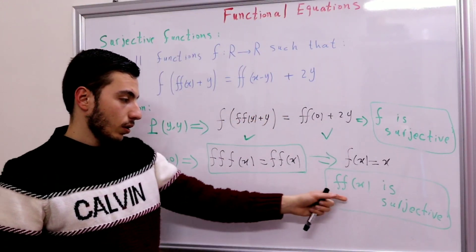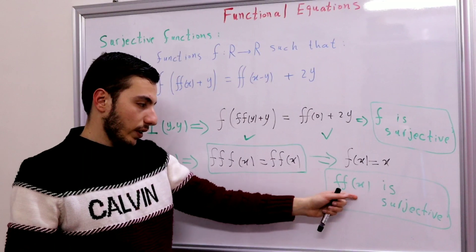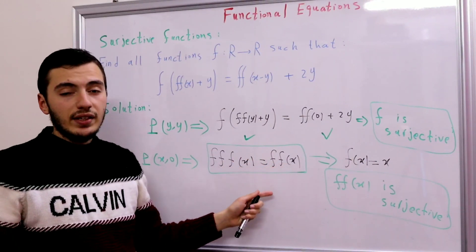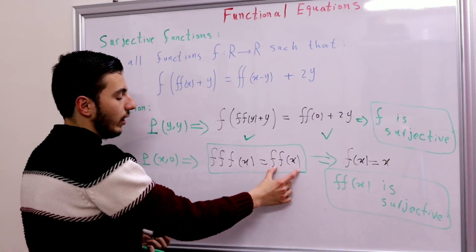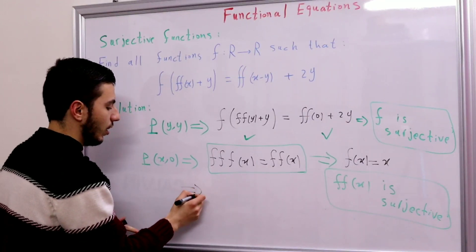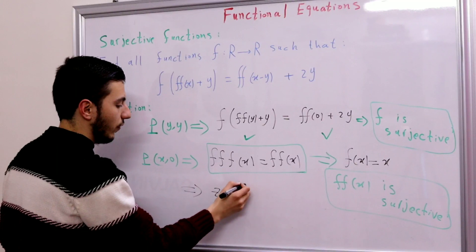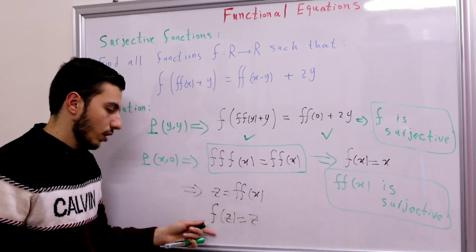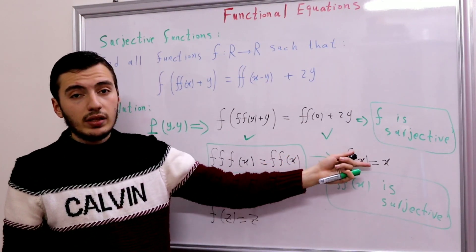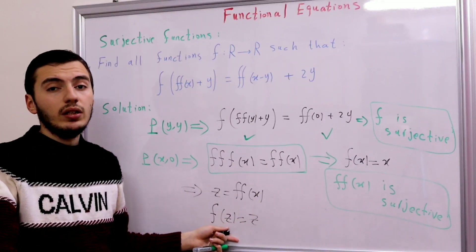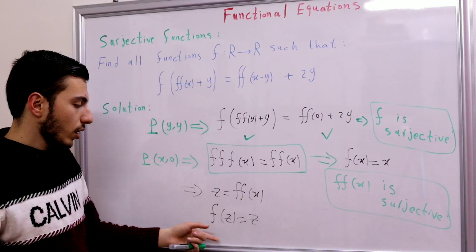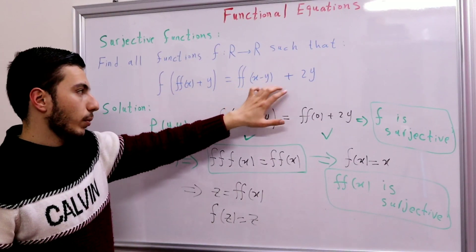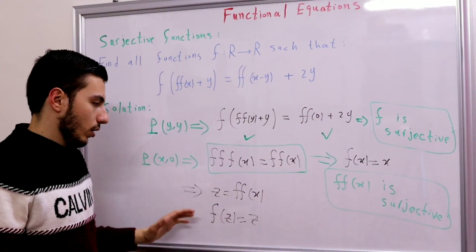Since f(f(x)) is subjective, we can set z = f(f(x)), which can take any real number. Then f(f(f(x))) = f(f(x)) becomes f(z) = z for all real z. So f(x) = x. Let's verify: x + y = x − y + 2y — that is correct. So we are done and the only solution is f(x) = x.